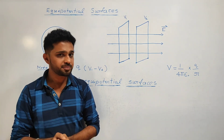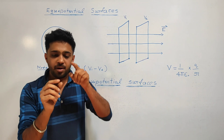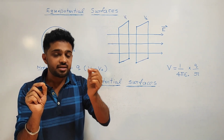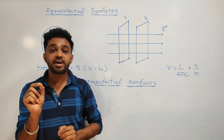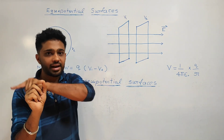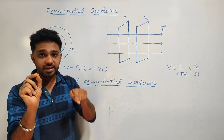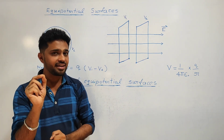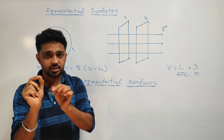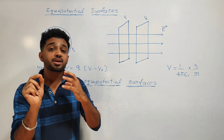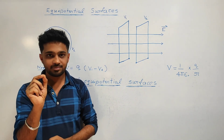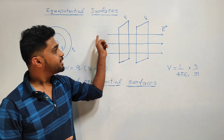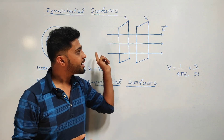For a point charge, the equipotential surface has a spherical shape. In a diagram it appears as a circle, but in three dimensions it is spherical. For a point source, the equipotential surface is a sphere.